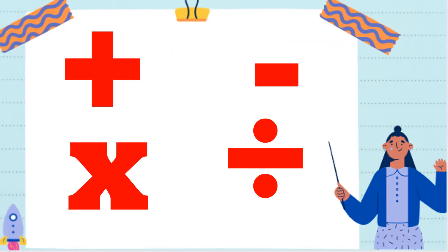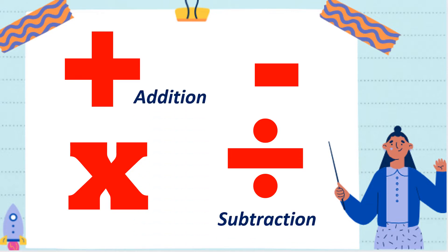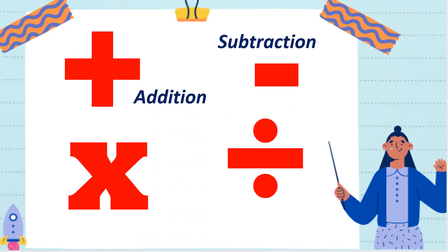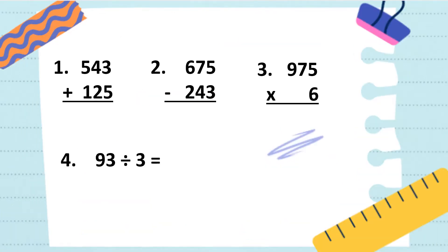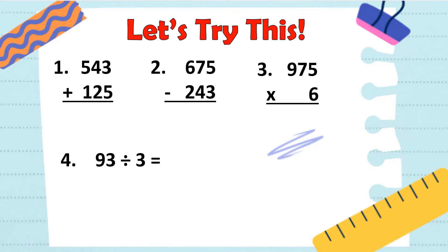Tingnan ang nasa larawan. Ano-ano ang mga ito? Tama! Ito ay mga simbolo or sign na ginagamit natin sa basic operations. Ito ang addition, subtraction, multiplication, at division. Now, let's try to solve this.